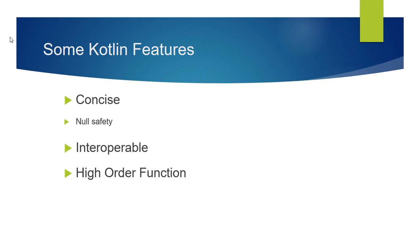Interoperable: Kotlin follows the same byte structure as Java, so we can use Java as well as Kotlin files in the same project. Also, Kotlin is platform independent, which means we can run the same code on Windows, Linux, and Mac. Higher-order functions: we can pass a function as a parameter to another function.